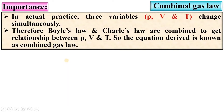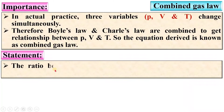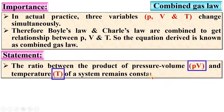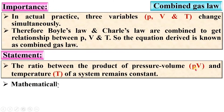Now look at the statement of the combined gas law. The ratio between the product of pressure, volume, and temperature of a system remains constant. So mathematically you can say PV by T is equal to constant.